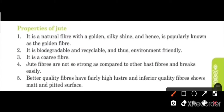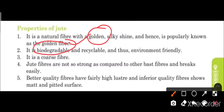Now let's discuss the properties of jute. It is a natural fiber with a golden, silky, and shiny appearance — hence it is popularly known as golden fiber. It is biodegradable and recyclable, making it environment friendly. Being biodegradable means it decomposes in nature without causing pollution.